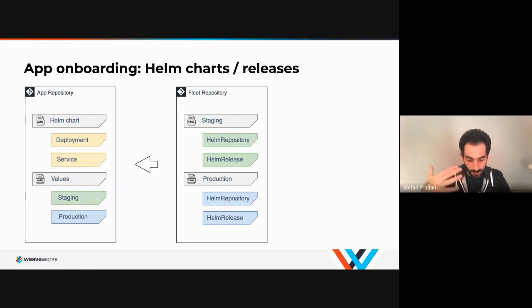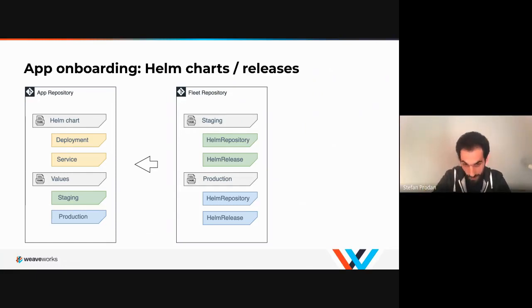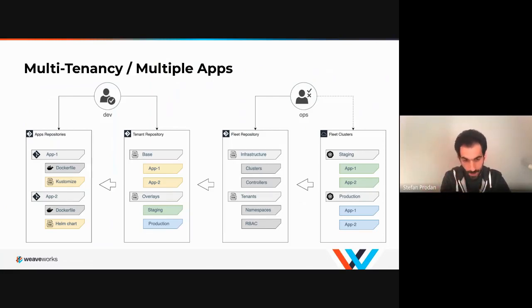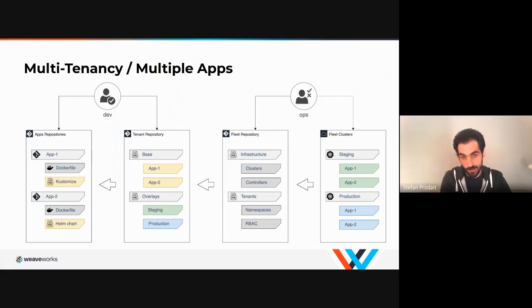All this means the cluster admin has to approve all these changes and be aware of them, so there is a lot of work for the platform team. Based on user feedback, there's a different setup to enable in the future — maybe in 0.2 — where you break the fleet repository into multiple things. Each tenant will have its own repo, and in there they register their own apps with Git repos, Helm, kpt, and all the things mentioned before. The cluster admin only has to onboard the single tenant repository, and then it's up to the tenant itself to add or remove apps.